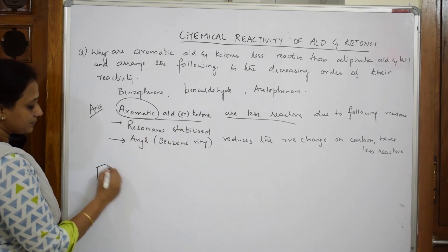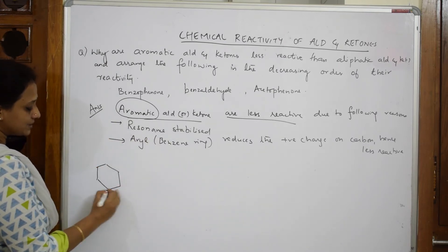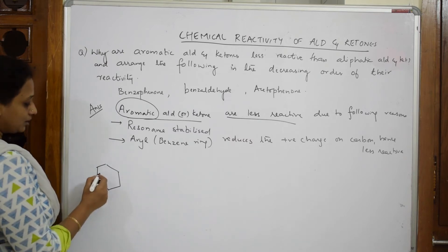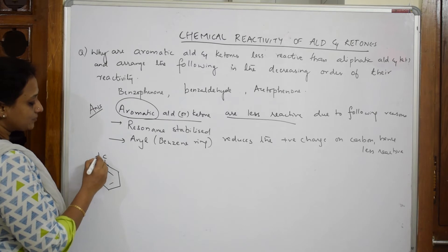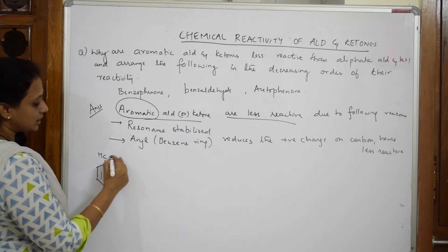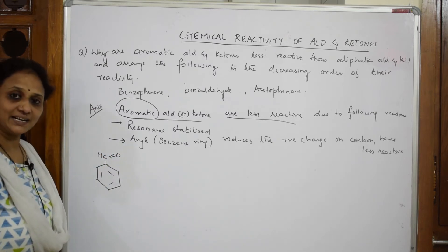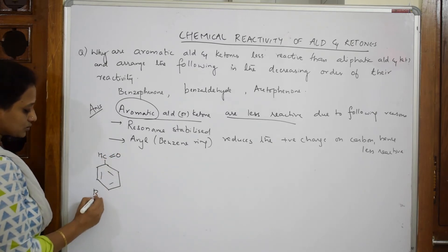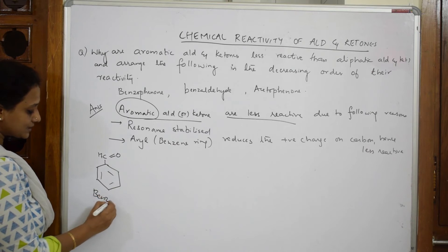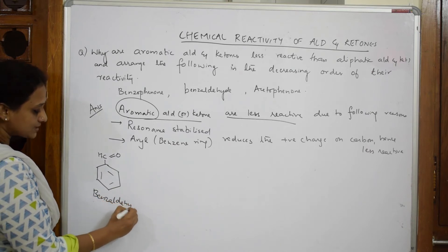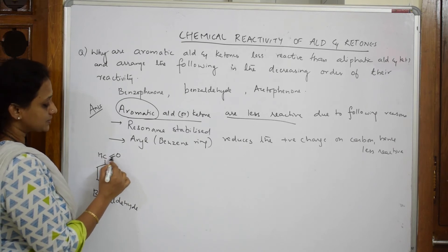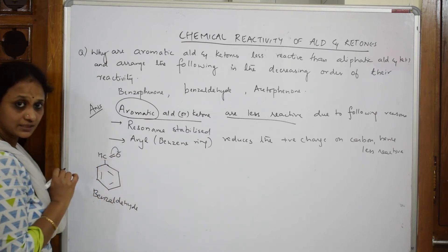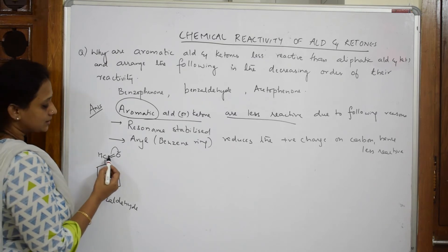Let us take one example of benzaldehyde. What is benzaldehyde? Benzene ring with CHO. This is benzaldehyde. Now, I said due to the electronegativity difference between carbon and oxygen, this particular oxygen is going to drag the electrons towards it.